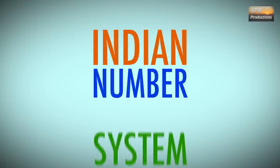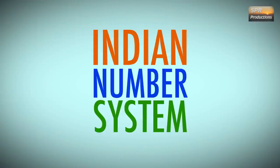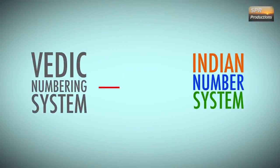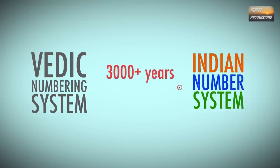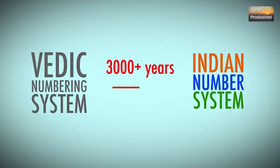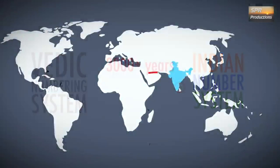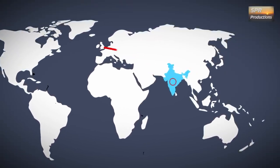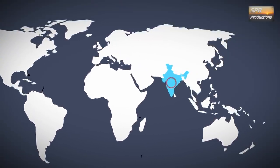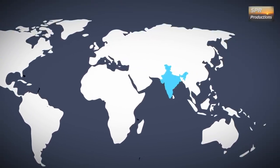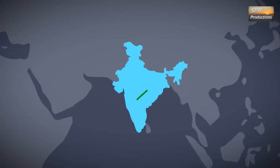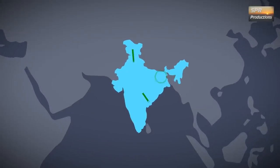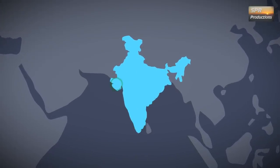The Indian number system has its roots in the ancient Vedic system, which is over 3000 years old. Over time, it has evolved, exchanging elements with the Arabic and Western number systems and getting simplified during translations between different national and international languages.